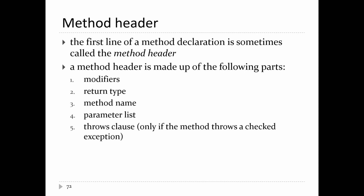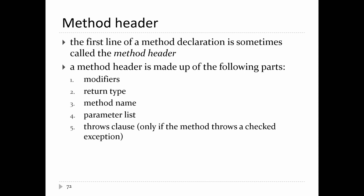When you write your method, you have to pay attention to how you actually declare it. The first line of the method declaration doesn't have a standard name — sometimes you'll see it called the method header. That's where you write 'public something something something.' The header is made up of the following parts: the modifiers, the return type, the name, the parameter list, and occasionally a 'throws' clause.